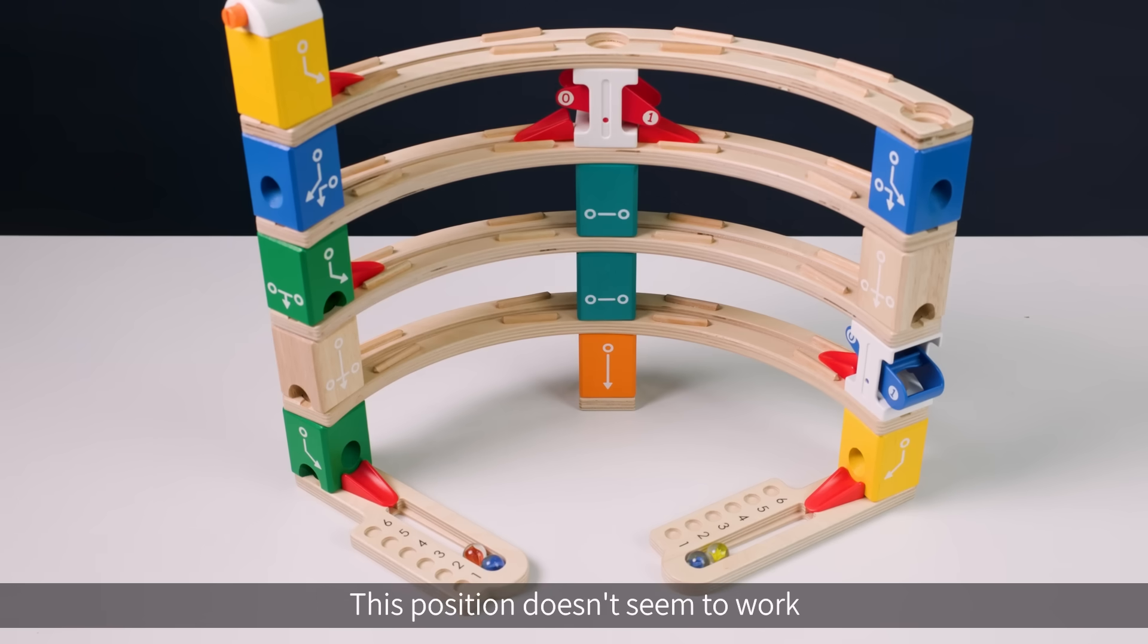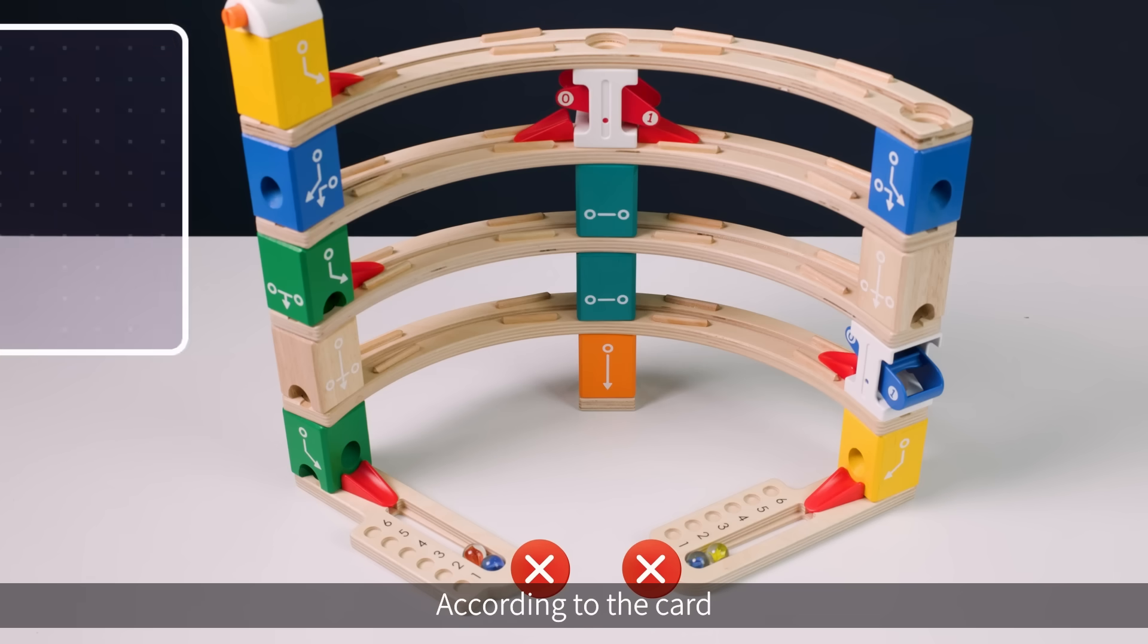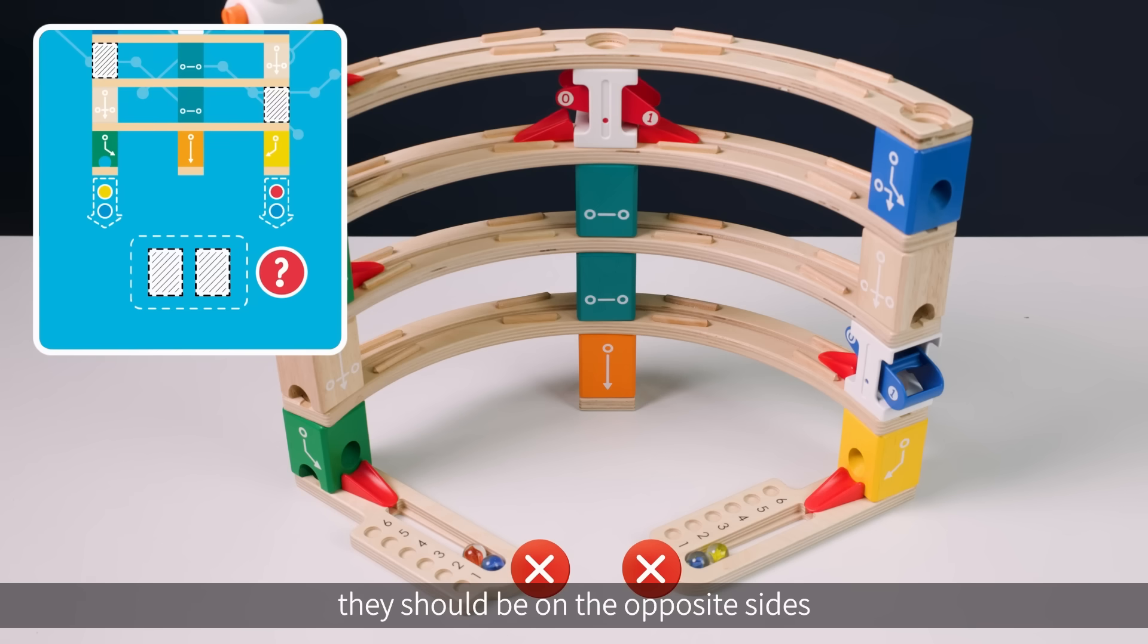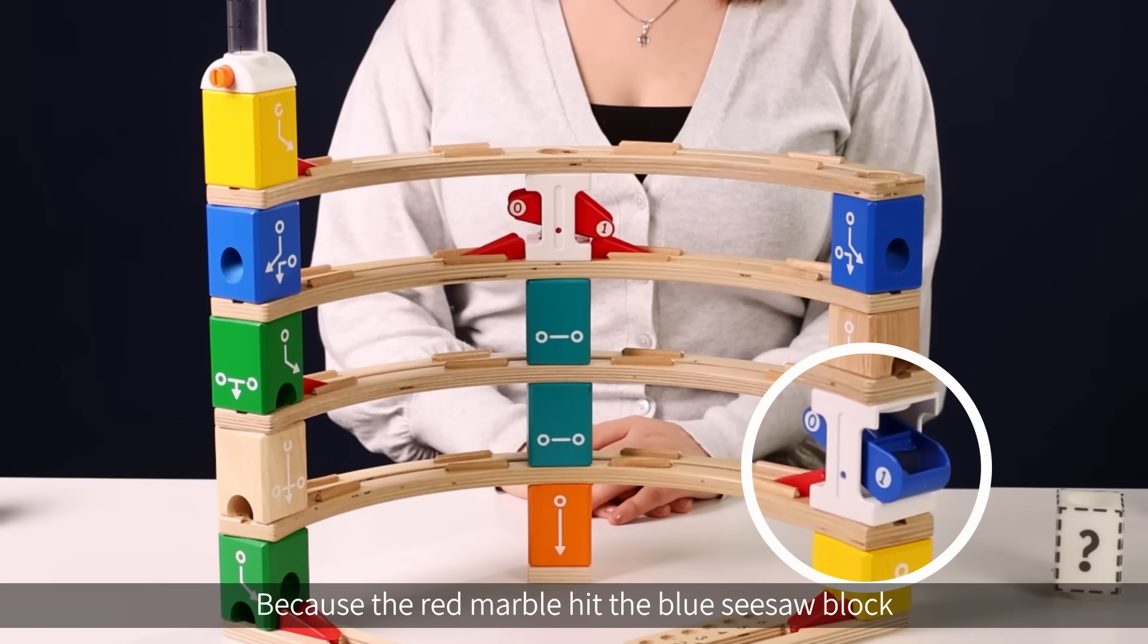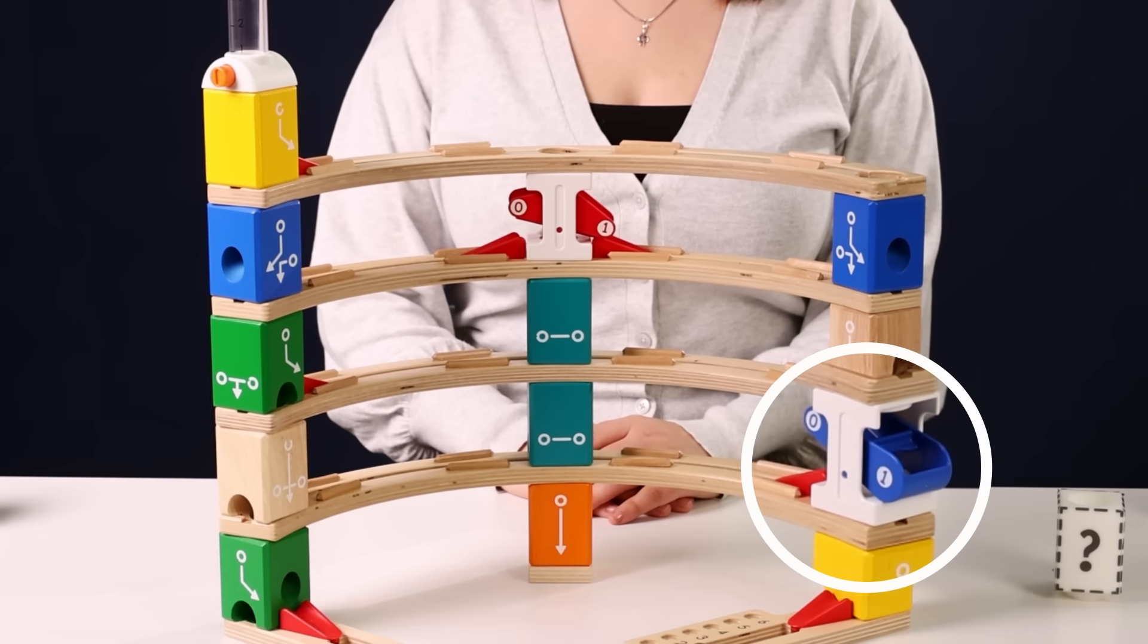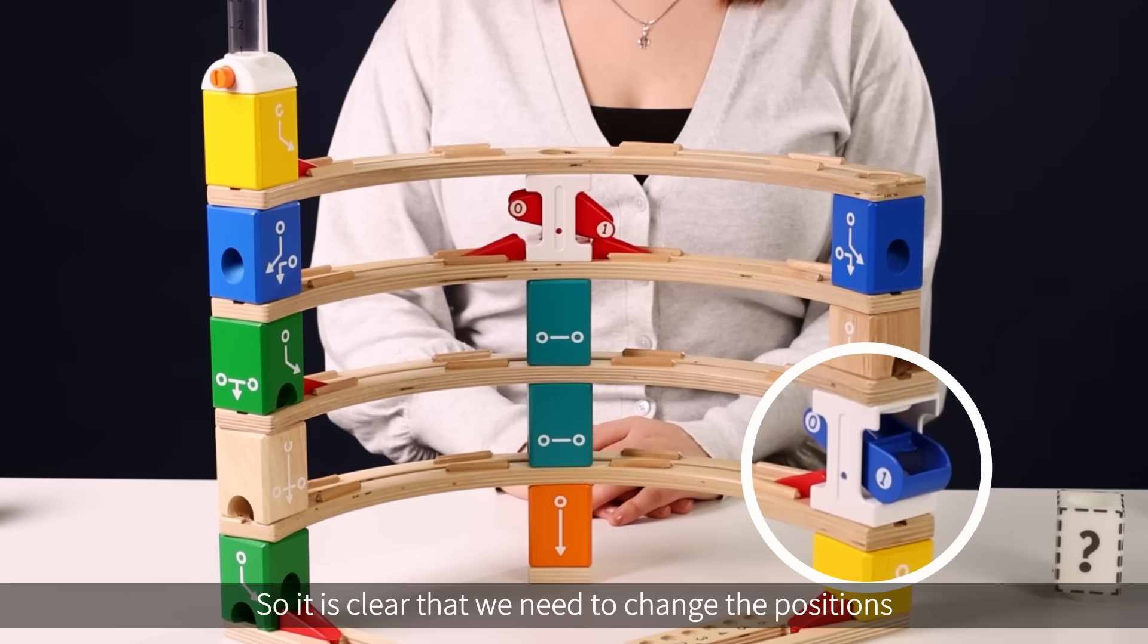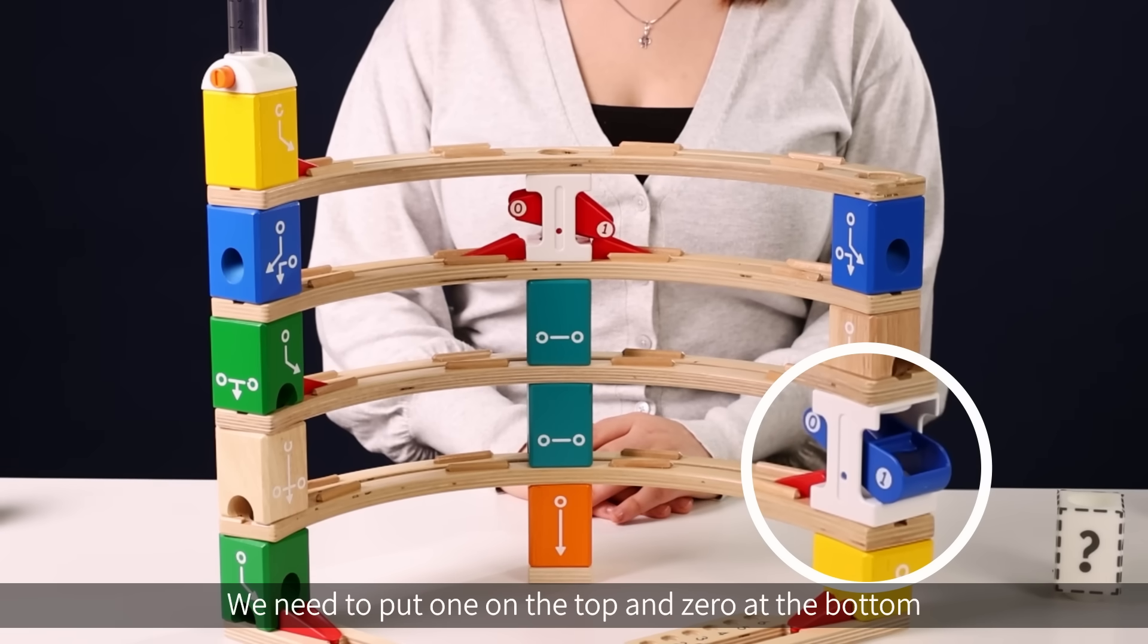Oops, this position doesn't seem to work because, look, the red and yellow marbles are on the wrong sides. According to the card, they should be on the opposite sides. Why did that happen? Let's take a look. Because the red marble hit the blue seesaw block when zero was positioned up and one was positioned down, it is clear that we need to change the positions.